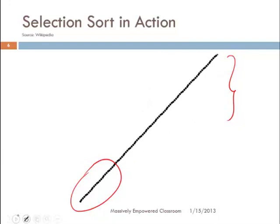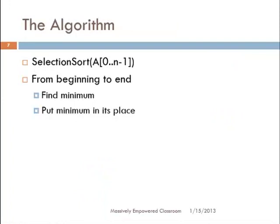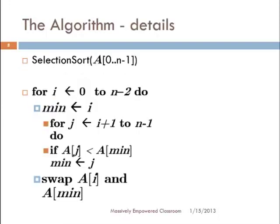Now we are ready to understand how to write the algorithm for selection sort. We are given an array A of n elements from 0 to n minus 1. Stated in plain English, selection sort is: from beginning to end, find the minimum and put the minimum in its proper place. But that is not quite an algorithm because it is not pseudocode — it is not yet precise. So let us add more detail to make it an algorithm. Selection sort takes an array A from 0 to n minus 1; for i equals 0 to n minus 2, do.